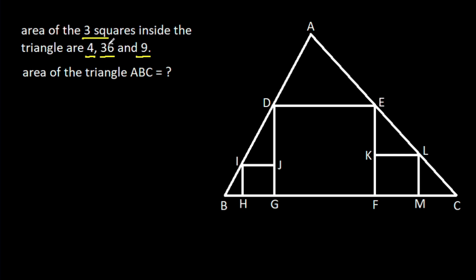We have 3 squares, which means these angles will be 90 degrees. So this angle will also be 90 degrees, and this angle will also be 90 degrees, and this angle will also be 90 degrees. Now these three angles they will be equal — suppose alpha — and these three angles they will be equal — suppose beta.